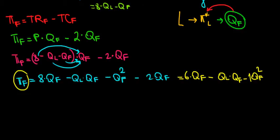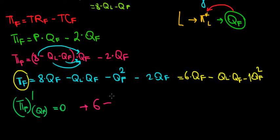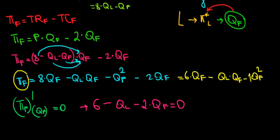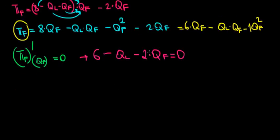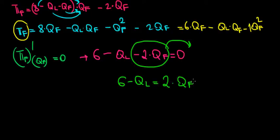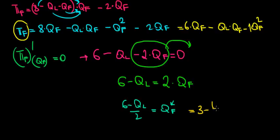To maximize this, we take the derivative with respect to QF and set it equal to zero. The derivative gives: six minus QL minus two QF equals zero. Rearranging, six minus QL equals two times QF. Dividing both sides by two, the equilibrium quantity of the follower equals three minus one-half times QL.